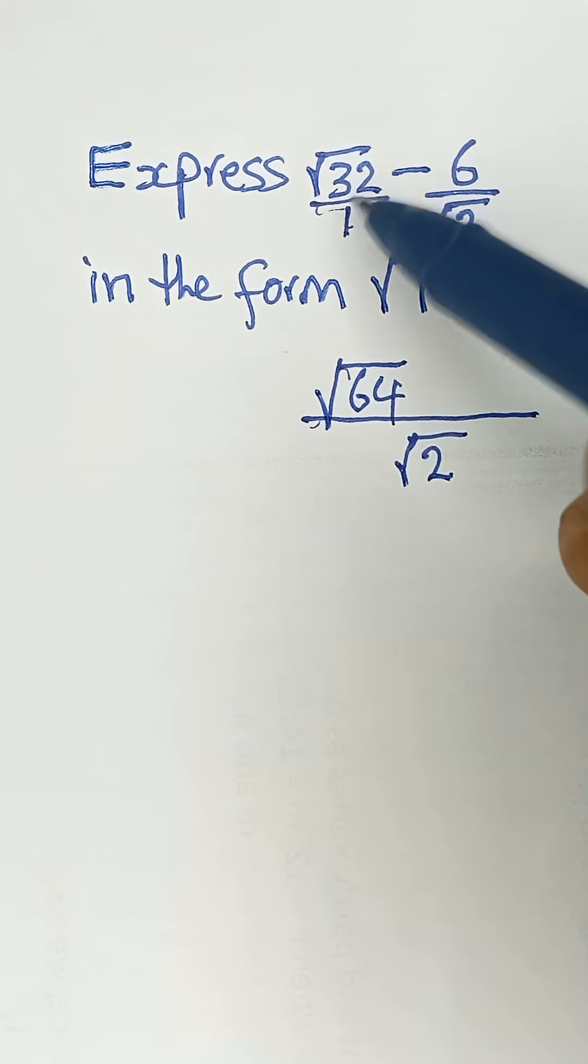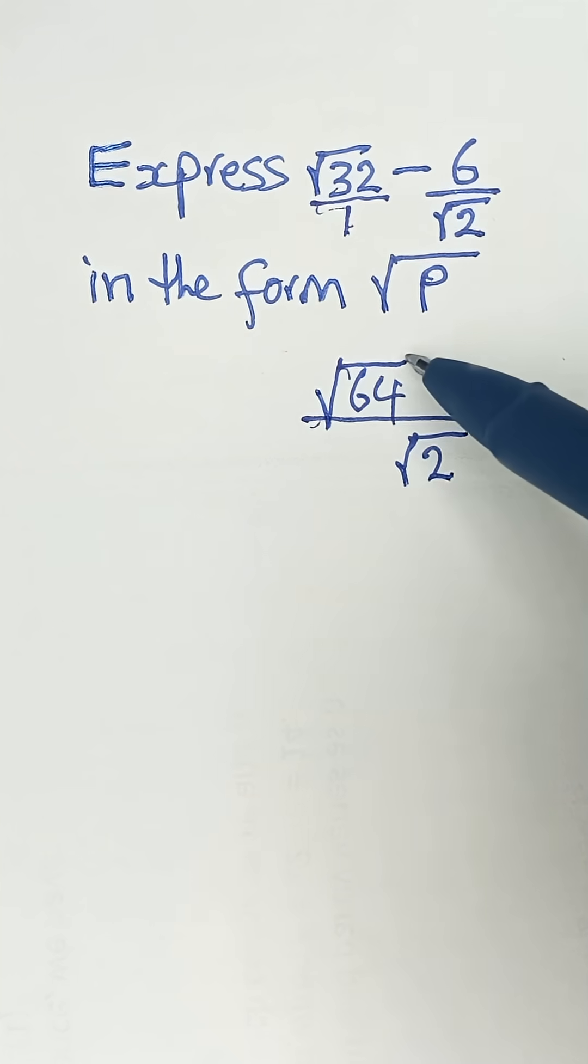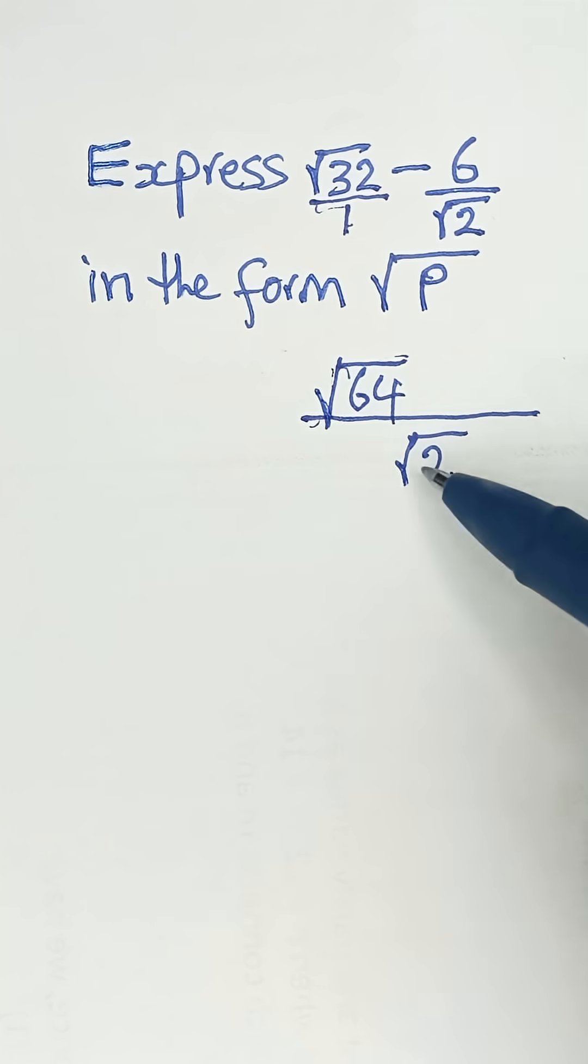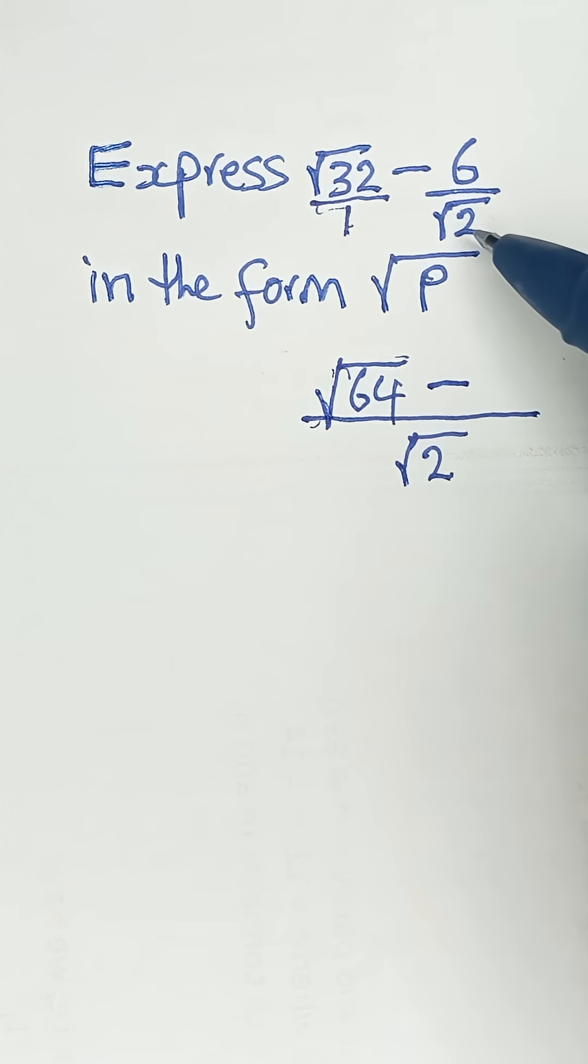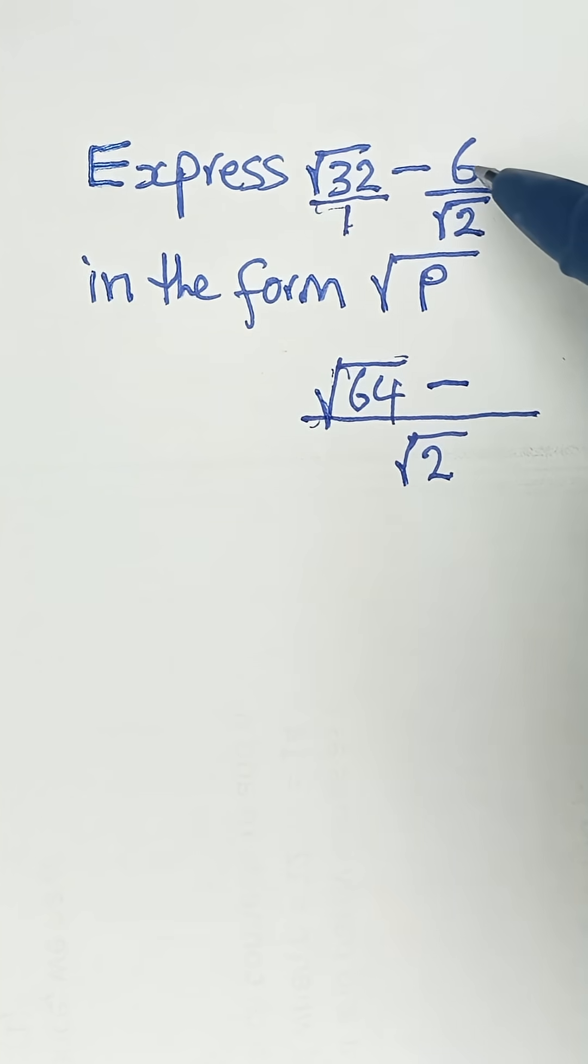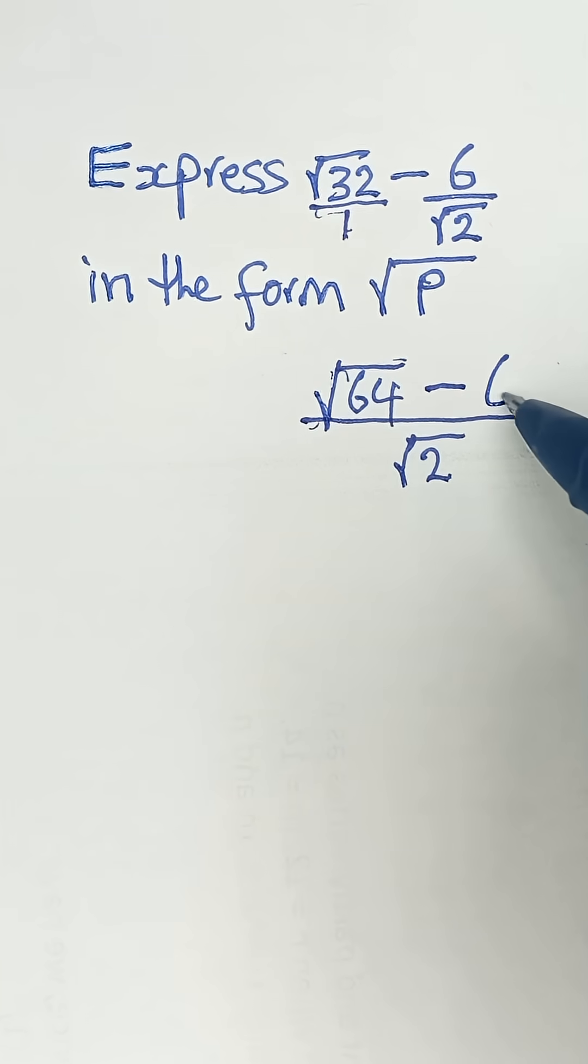That is, the 2 multiplied by the 32 will give us 64. And then you introduce the root sign because they are both in radical form. Then minus √2 divided by √2 is 1. Then 1 multiplied by 6 will give us 6.